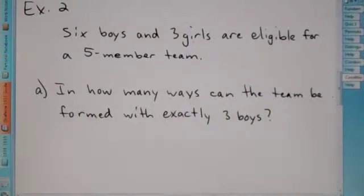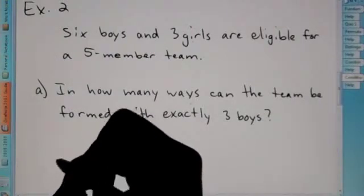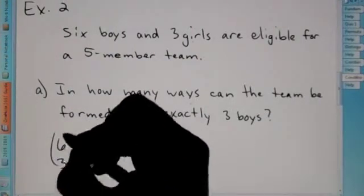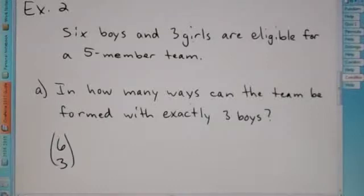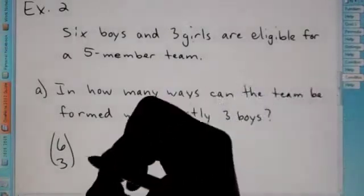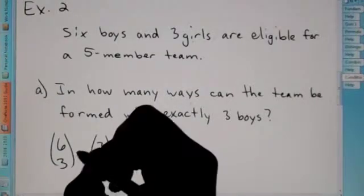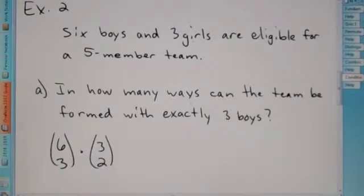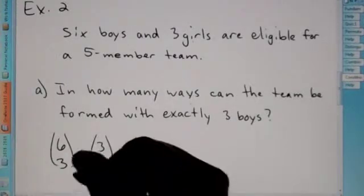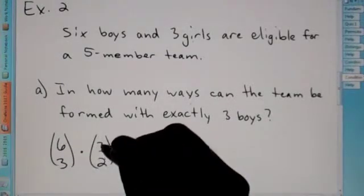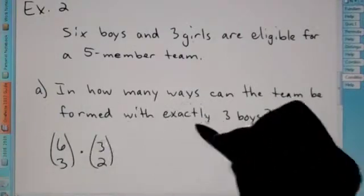So we have six boys, three girls, to make a five-member team. So three out of the six boys will be selected. Now, but that means you have two out of the three girls will be selected. And we're going to multiply these. In how many ways can the team be made to get a five-member team? So three out of the six boys and two out of the three girls will make one team.